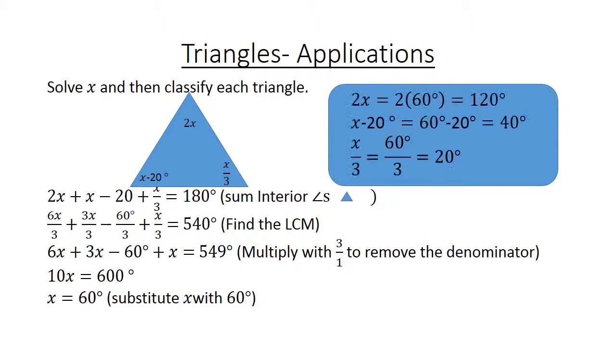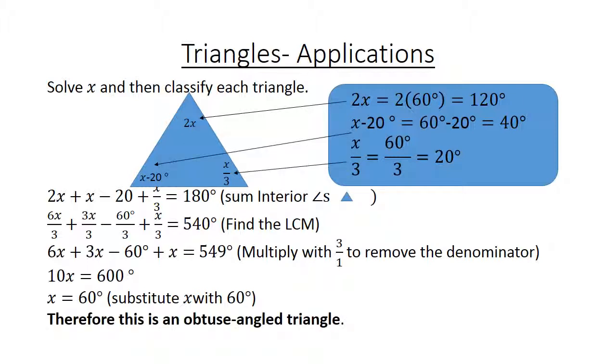We substitute X with 60 degrees. 2X equals 120 degrees. X minus 20 degrees equals 40 degrees. And if we divide X by 3, it's 20 degrees. And if we add them all up, it's equal to 180 degrees.